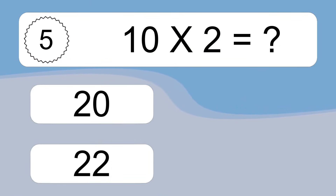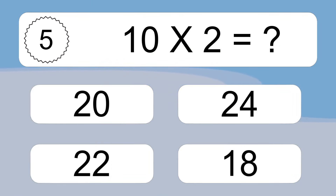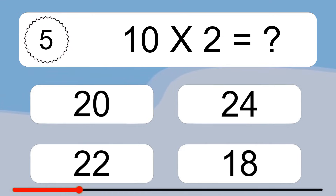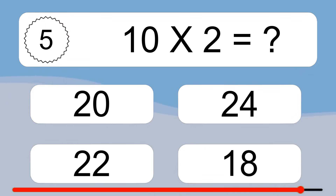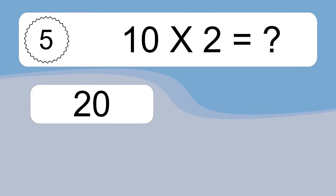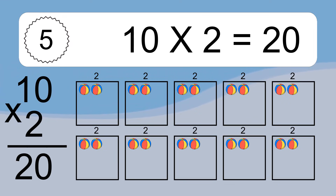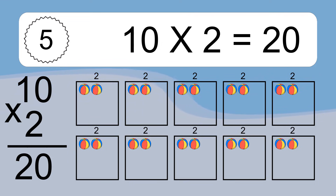10 times 2 equals what? 10 times 2 equals 20. We have 10 boxes, and each box has 2 colorful balls inside. If you count all the balls in all the boxes together, you will have 10 times 2 balls. This equals 20 balls.